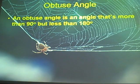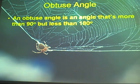Obtuse Angles. An obtuse angle is an angle that's more than 90 degrees but less than 180 degrees.